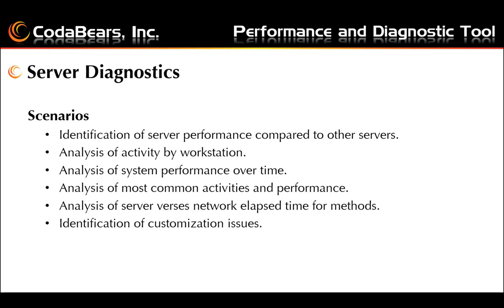You can analyze server versus network elapsed time for methods by viewing execution times of specific method calls on a workstation and comparing them against the same calls from the client trace analysis. For identification of customization issues, you can analyze the elapsed time to call a specific method compared to other server installations — this may indicate issues with customizations, business process management (BPM) methods, data directives, or C code customizations.